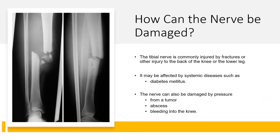So how can the tibial nerve be damaged? The tibial nerve is commonly injured by trauma — fractures. If we look at this x-ray here, your tibial nerve runs right behind the bone, so this bone can damage and hit into that nerve depending on how the fracture is situated, as well as if the fracture creates a lot of swelling, which can create local compression. Another way is through systemic diseases like diabetes mellitus, which creates a vascular injury around the nerves, eventually leading to nerve damage. The nerve can also be affected by a tumor, an abscess, or bleeding of the knee — anything that creates local compression and affects the function of the nerve.